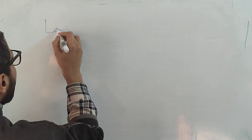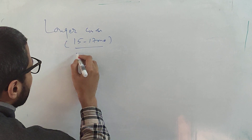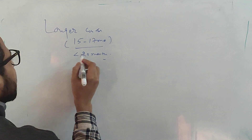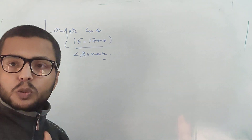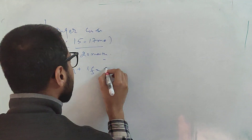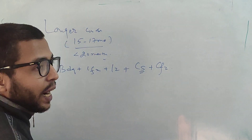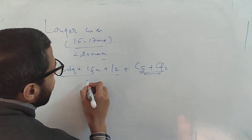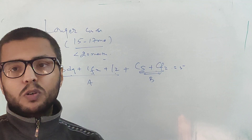The longer course regimen ranges from 15 to 17 months, not exceeding 20 months — about twice that of the shorter course regimen. For drugs, you include all Group A drugs: bedaquiline, levofloxacin, linezolid. From Group B, you include cycloserine or terizodone (not both, as they have the same mechanism), and clofazimine. This gives a total of 5 drugs, and you should include at least 4 to 5 drugs.